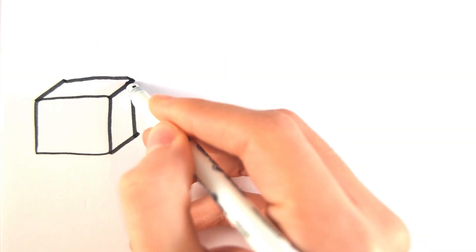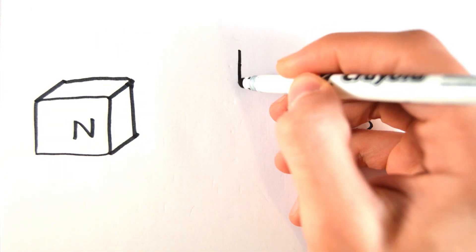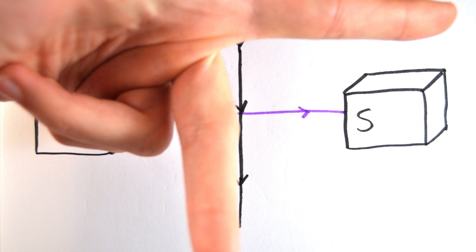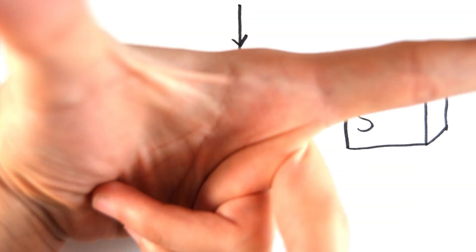To determine the direction of the force, you can use a handy trick called Fleming's left-hand rule. The way this works is by taking your left hand and making this shape with it. You then assign your first finger to the direction of the magnetic field, which is always north to south, your second finger to the direction of the current, and your thumb to the direction of the force.